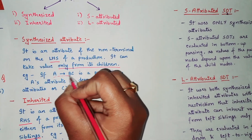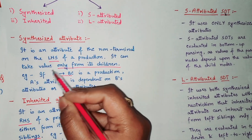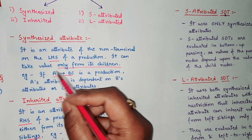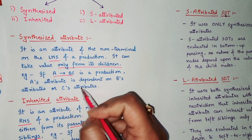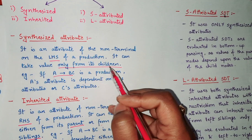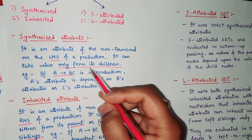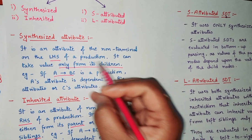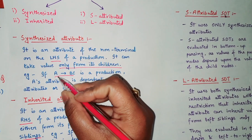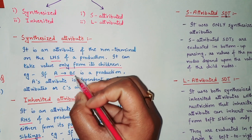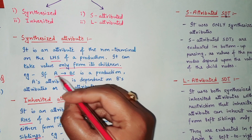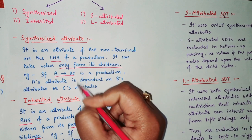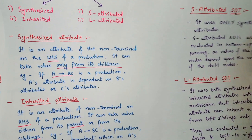For example, if A → BC is a production, we know A is the parent and B and C are the children. A's attribute is dependent on B's or C's attributes, because B and C are both children of A. So the value of A depends on either B or C. In this case, we say it is a synthesized attribute.